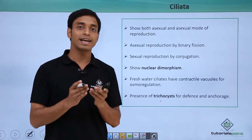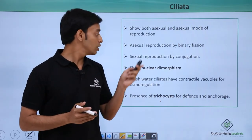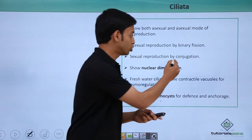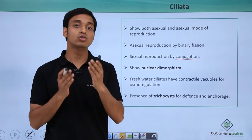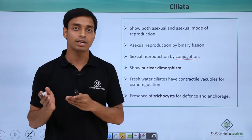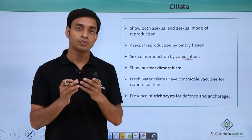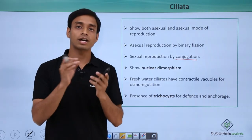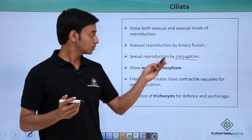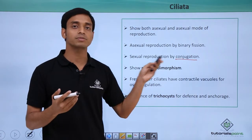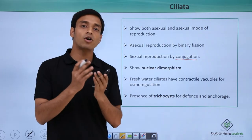They can also reproduce through sexual reproduction. Unlike Sarcodina, which reproduces sexually by syngamy, Ciliata reproduce by a method known as conjugation. In conjugation, two cells come together but do not fuse. A conjugation tube is formed with the help of cilia or pili-like projections, through which specific genes are exchanged — passed from one cell to the other and vice versa.